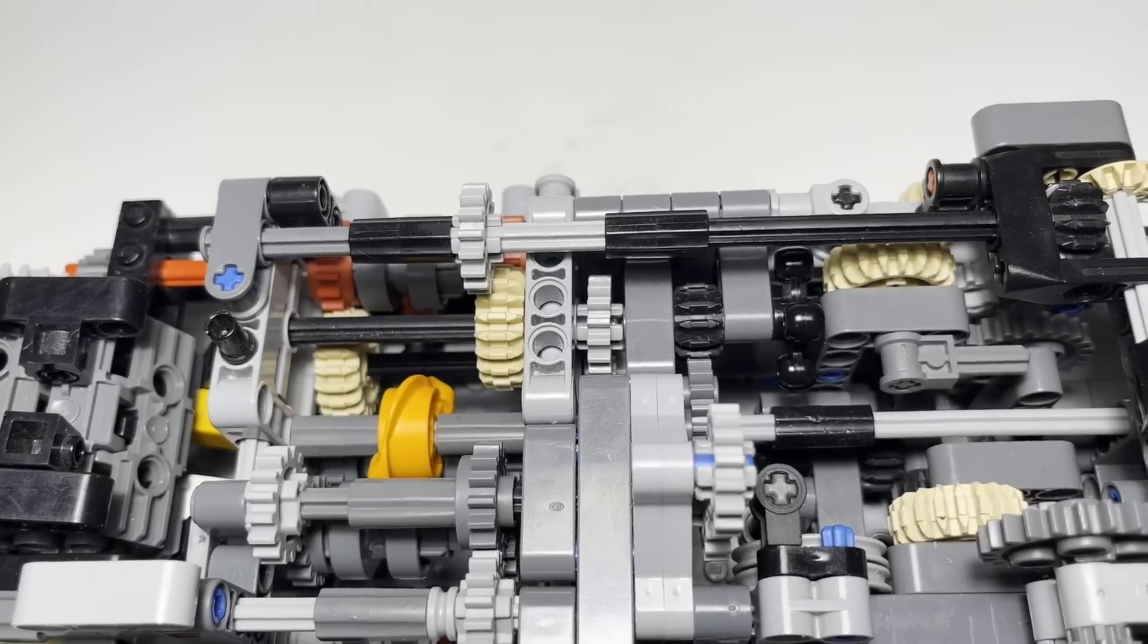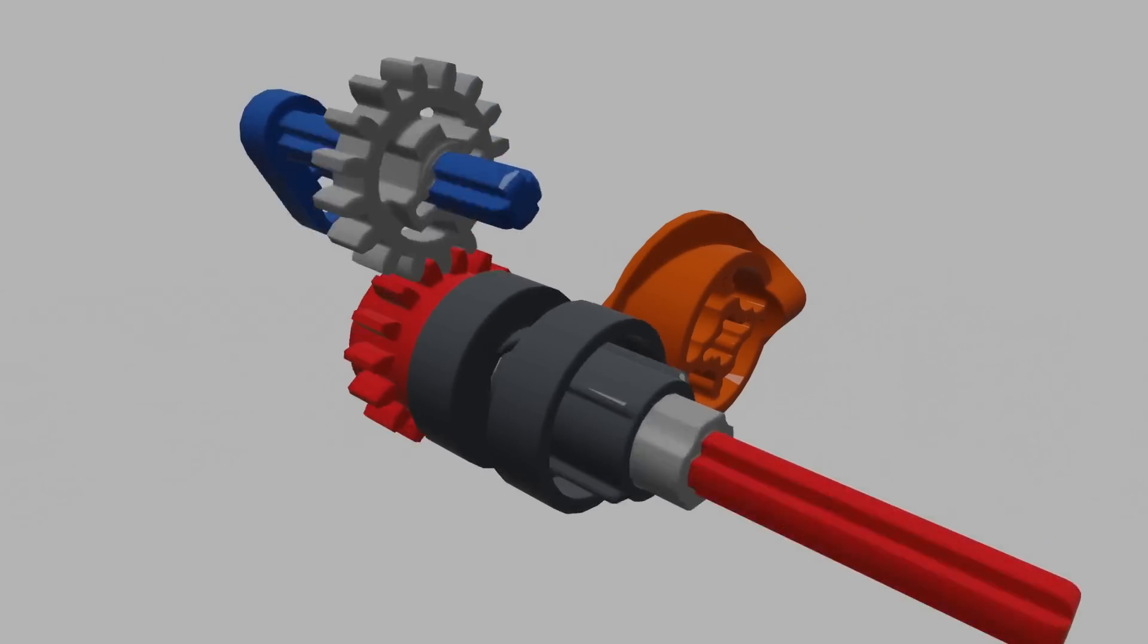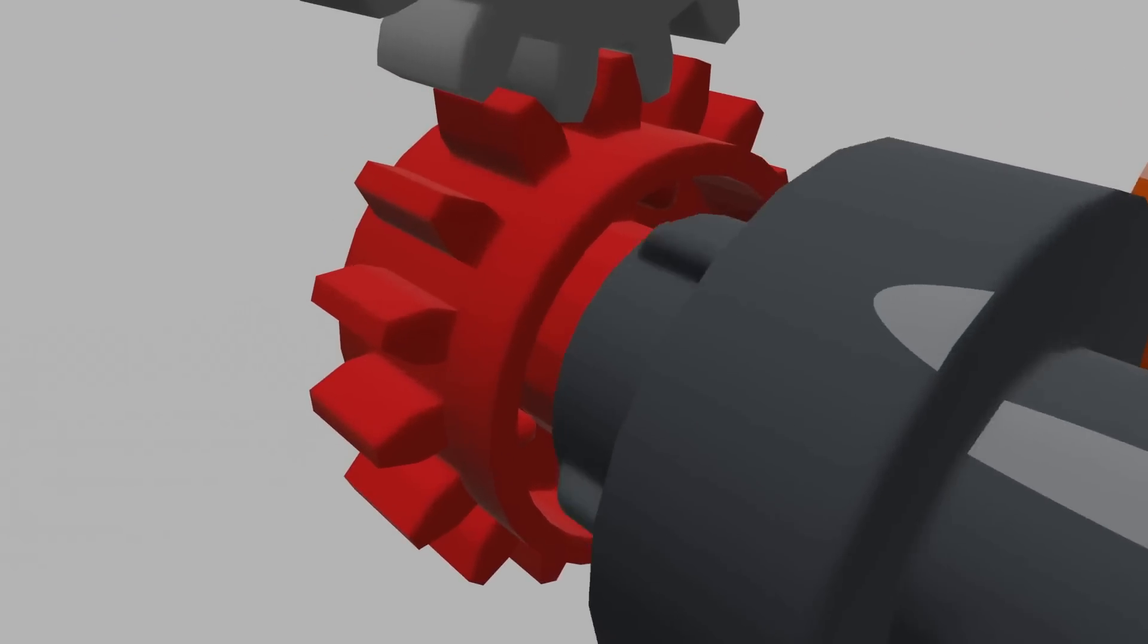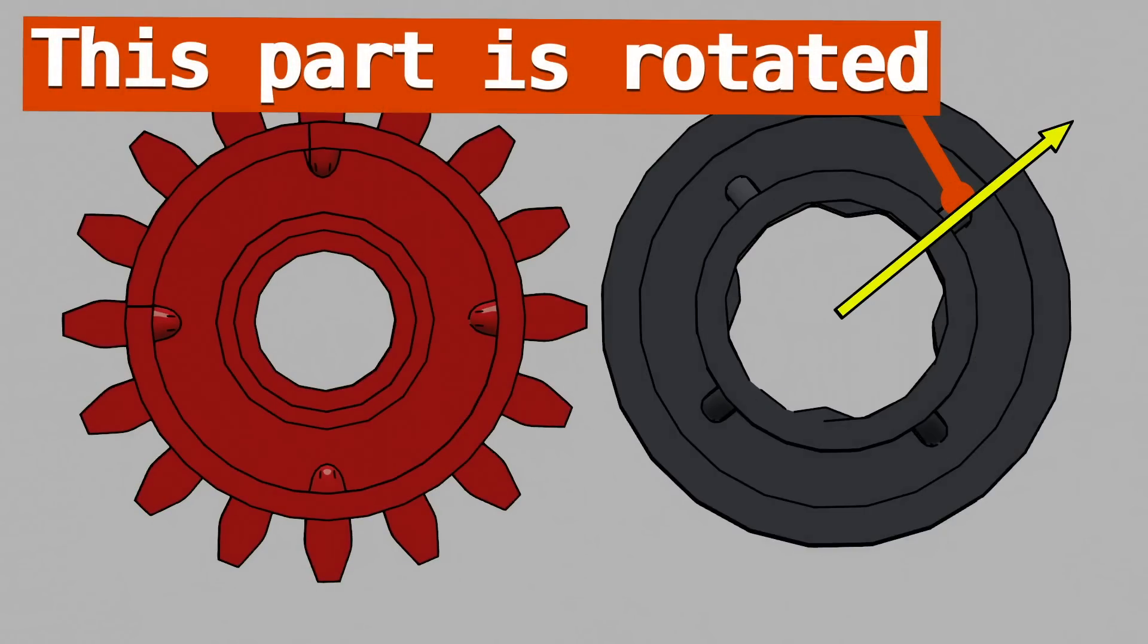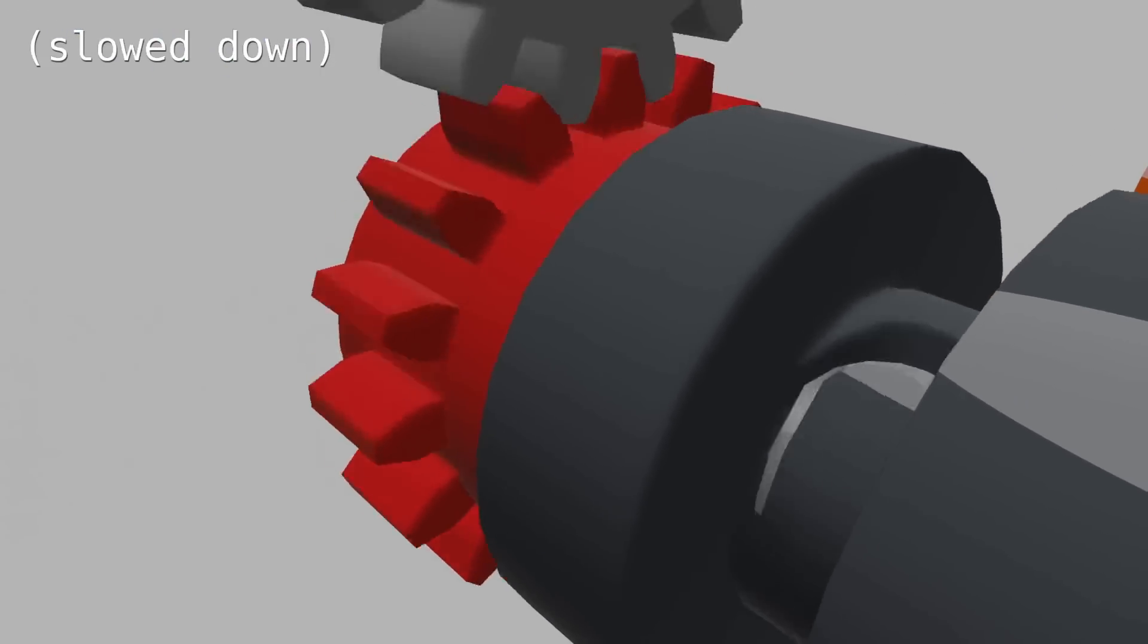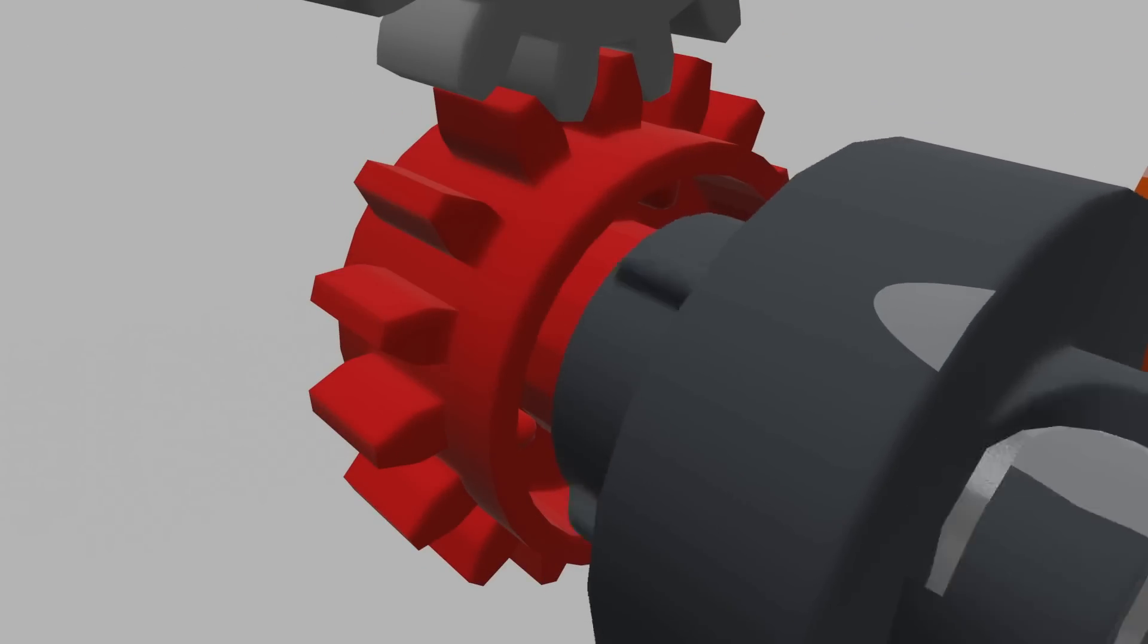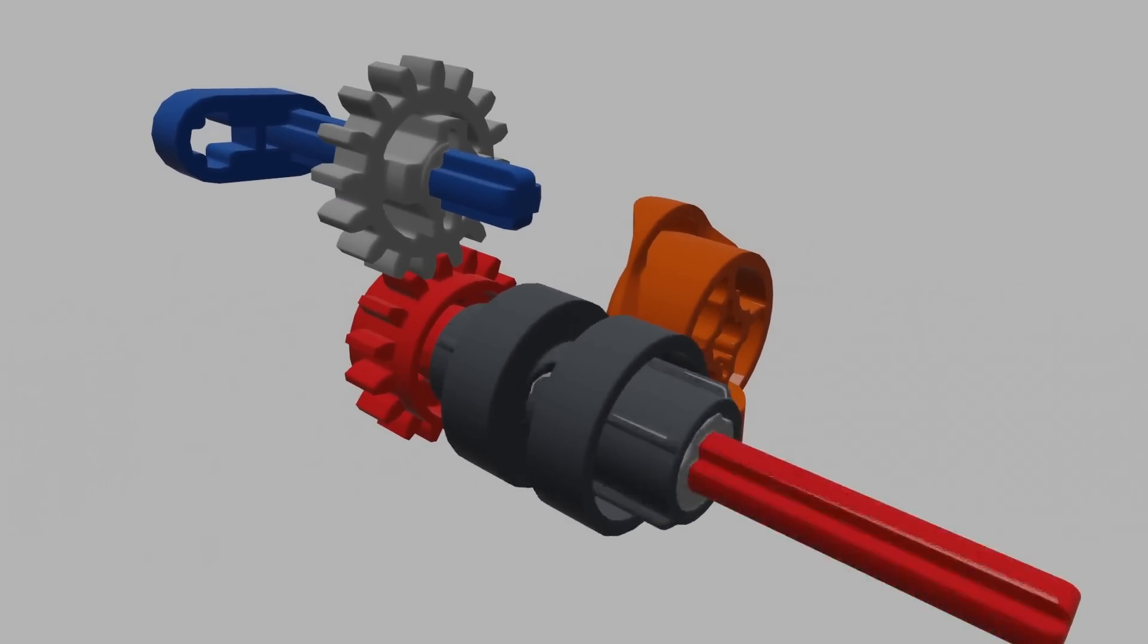Everything is controlled by a stepper mechanism. To show how it's so precise I made another animation. Namely, the outputs of the gearbox always make exactly 3 rotations. That's because the gearbox has extra space to catch the gear. As you can see this part is rotated while this one is not. The gear always ends up in the same position because each cycle the gearbox makes a whole number of quarter turns. That's how the functions are executed in the right order during MPOC.